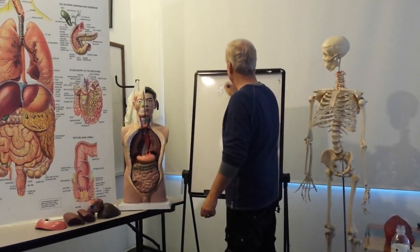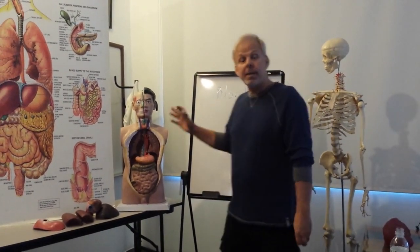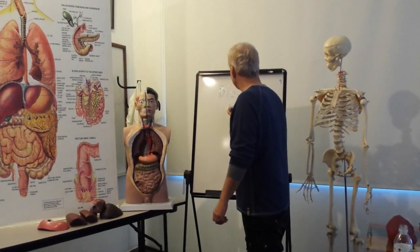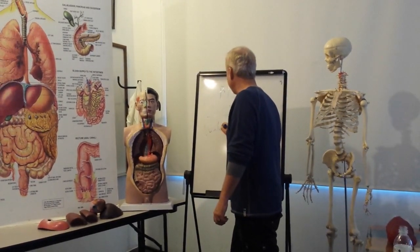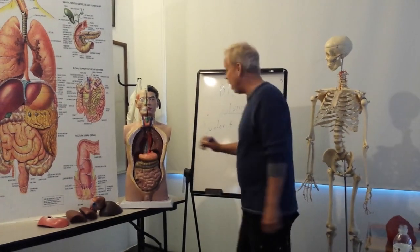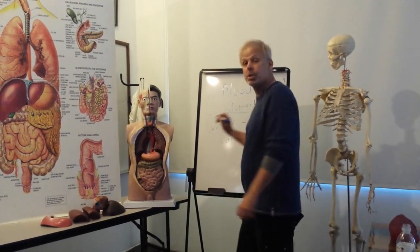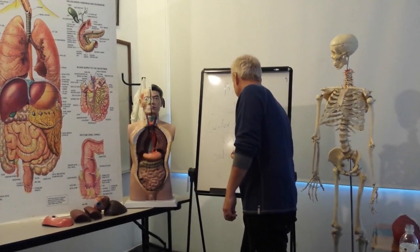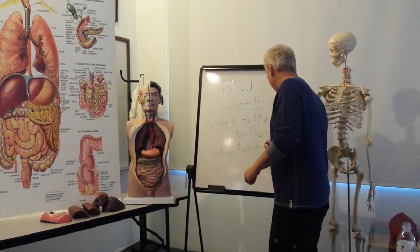It starts with the blood. In the blood there's water, there's carbon dioxide, and there's salt. The stomach pulls water — H2O — salt — NaCl — and carbon dioxide — CO2 — to make sodium bicarbonate. And our body is constantly making sodium bicarbonate.